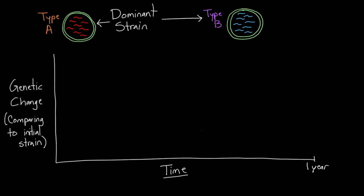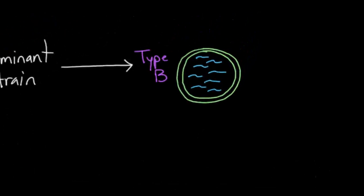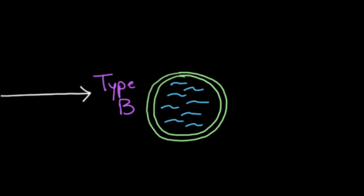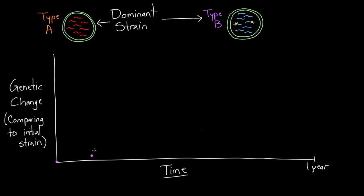Starting close to the purple community, initially there's no change in the type B strain. But some time passes, you come back and visit, and they tell you it's basically the same as it used to be — but there are two point mutations that have happened. So the dominant strain now has a couple of point mutations, it's a little different than before. There is some genetic change happening.